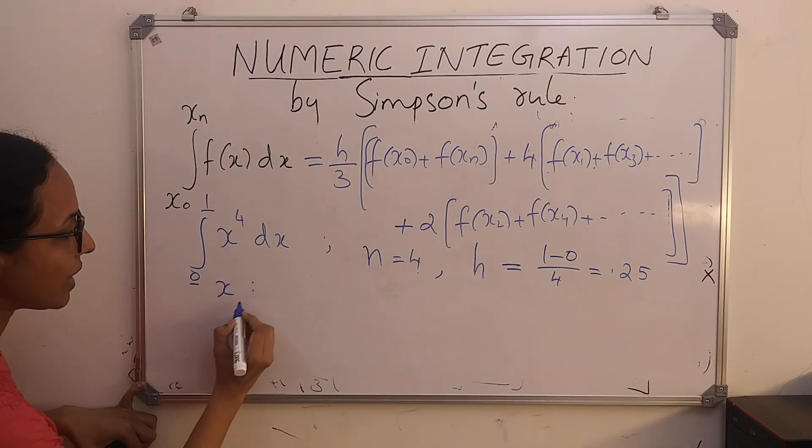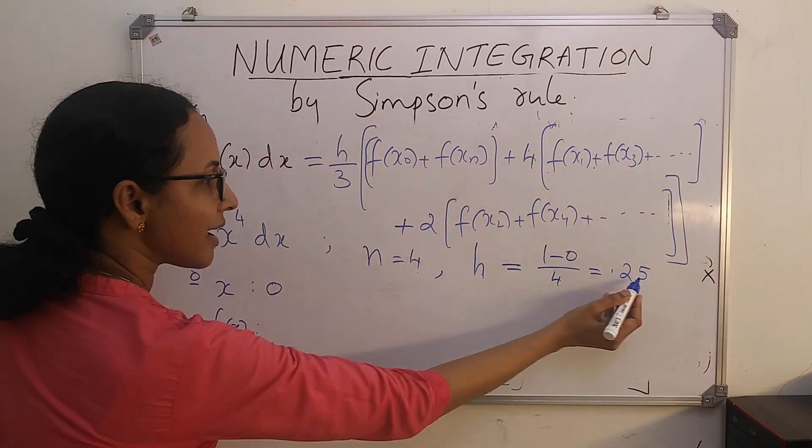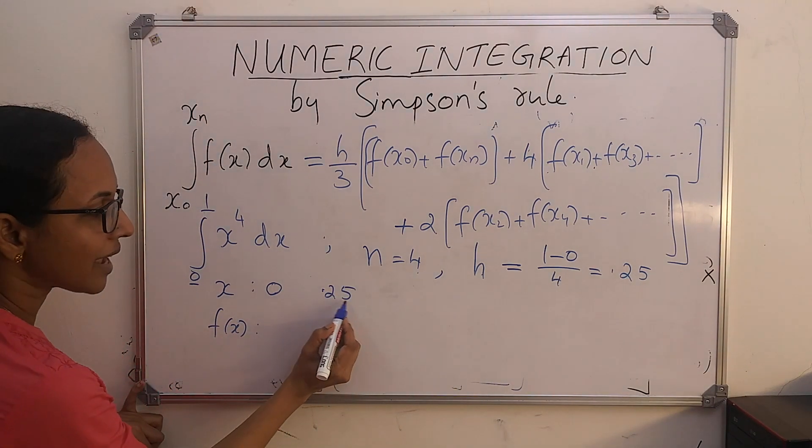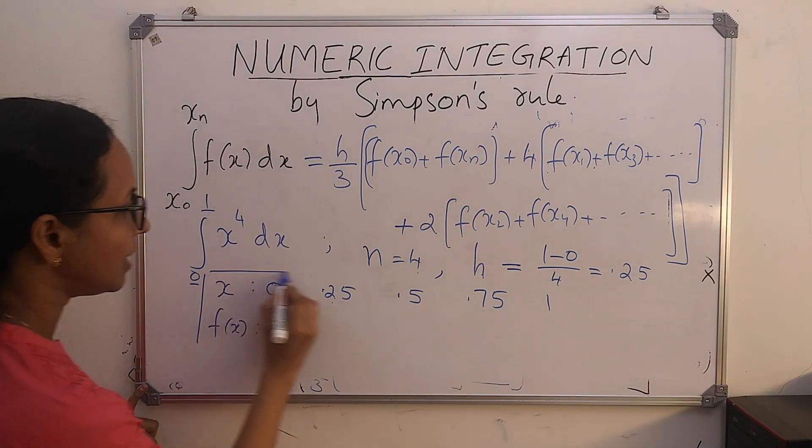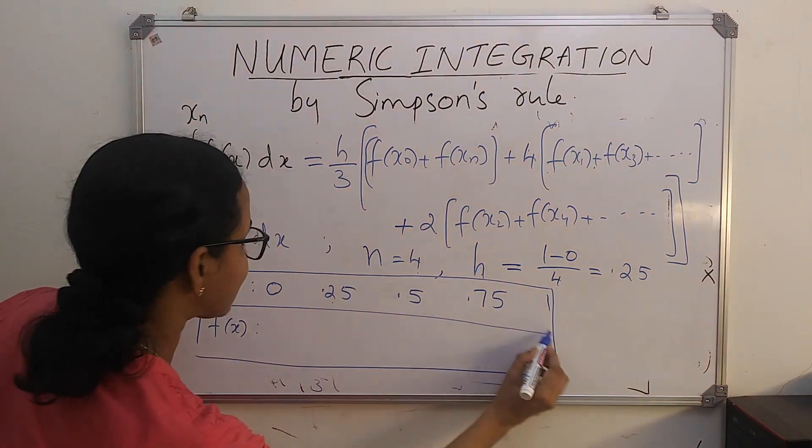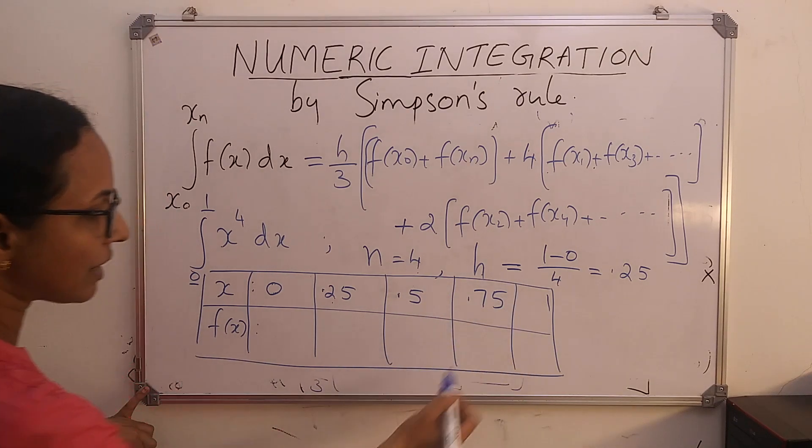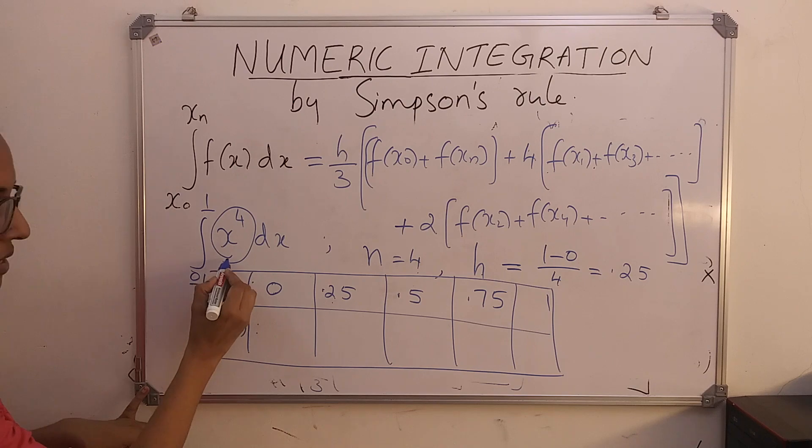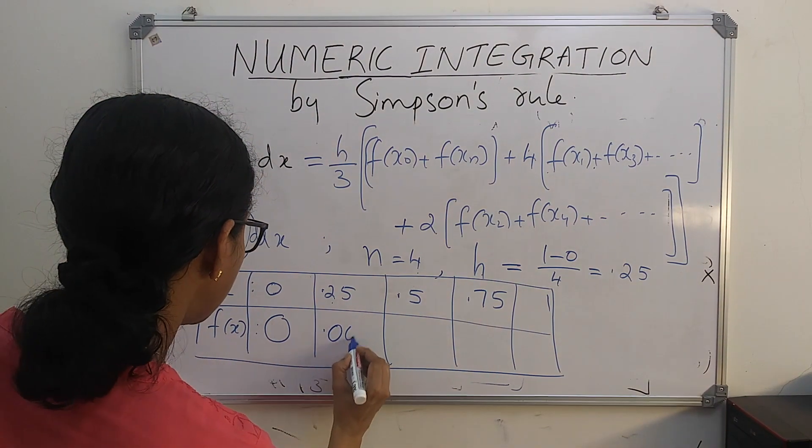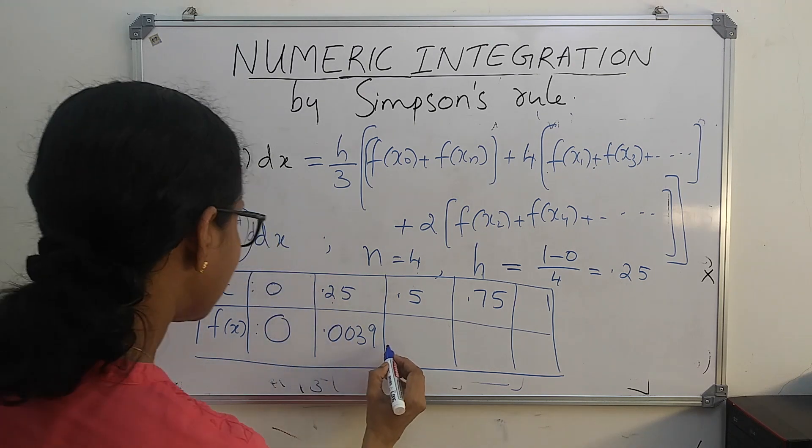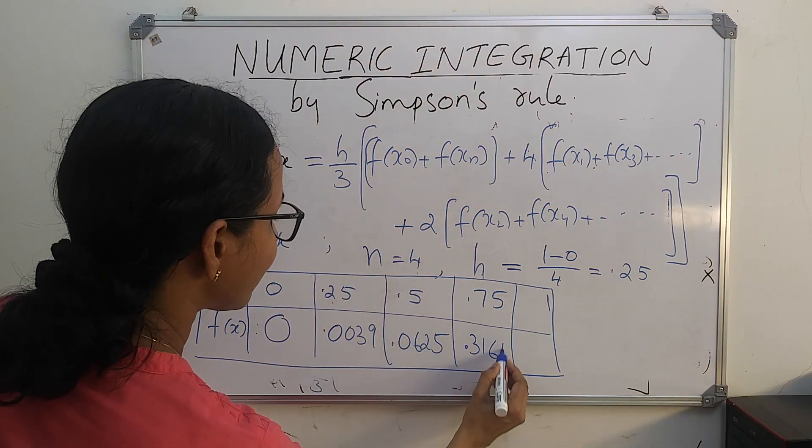Prepare the table with x values and f(x) values. Start with x0 is 0. Add h, 0.25. Again add h to get 0.5, then 0.75, and 1. Now evaluate f(x), which is x raised to 4. When you substitute, f(0) is 0, f(0.25) is 0.0039, 0.5 raised to 4 is 0.0625, 0.75 raised to 4 is 0.3164, and the last term is 1.